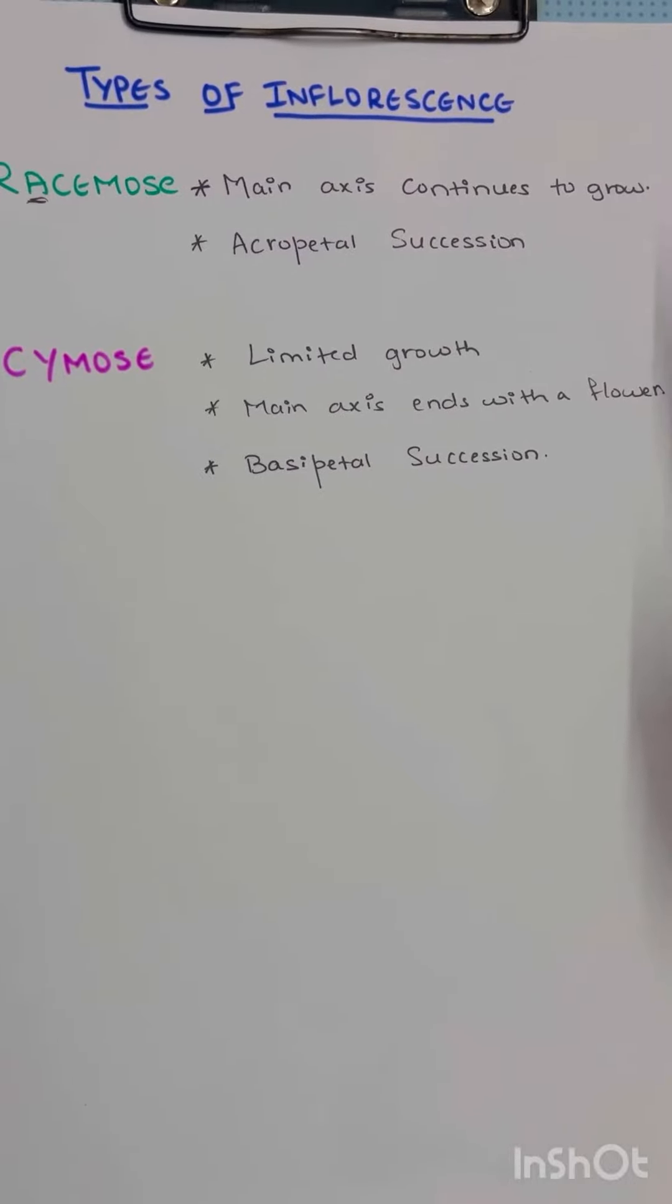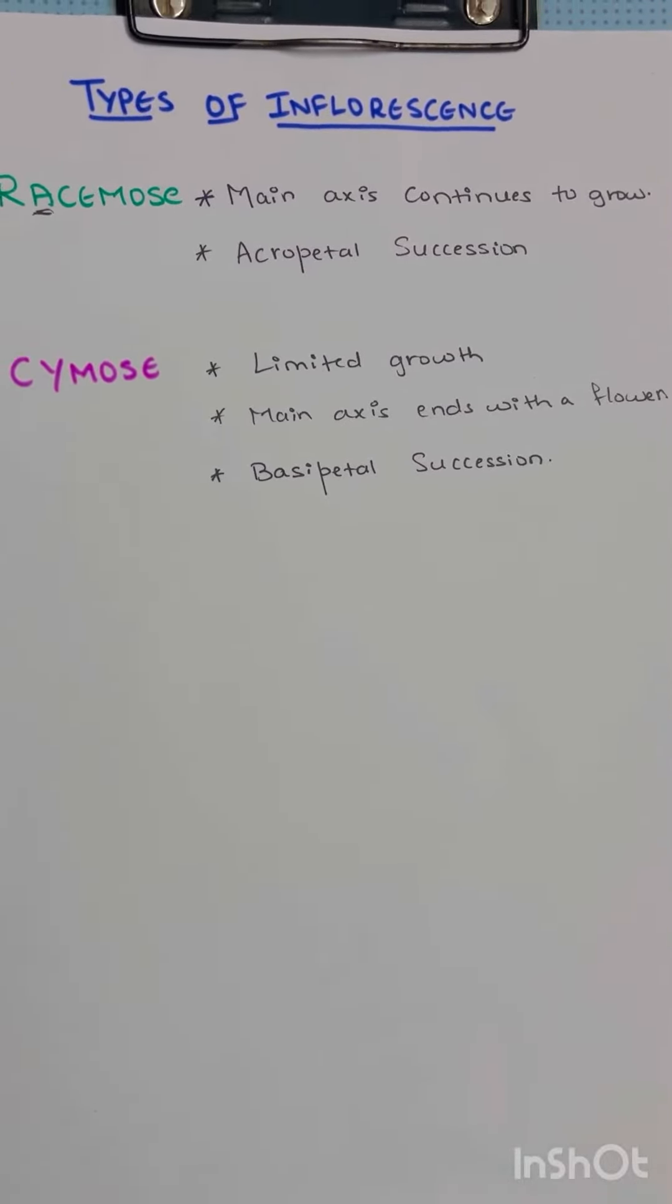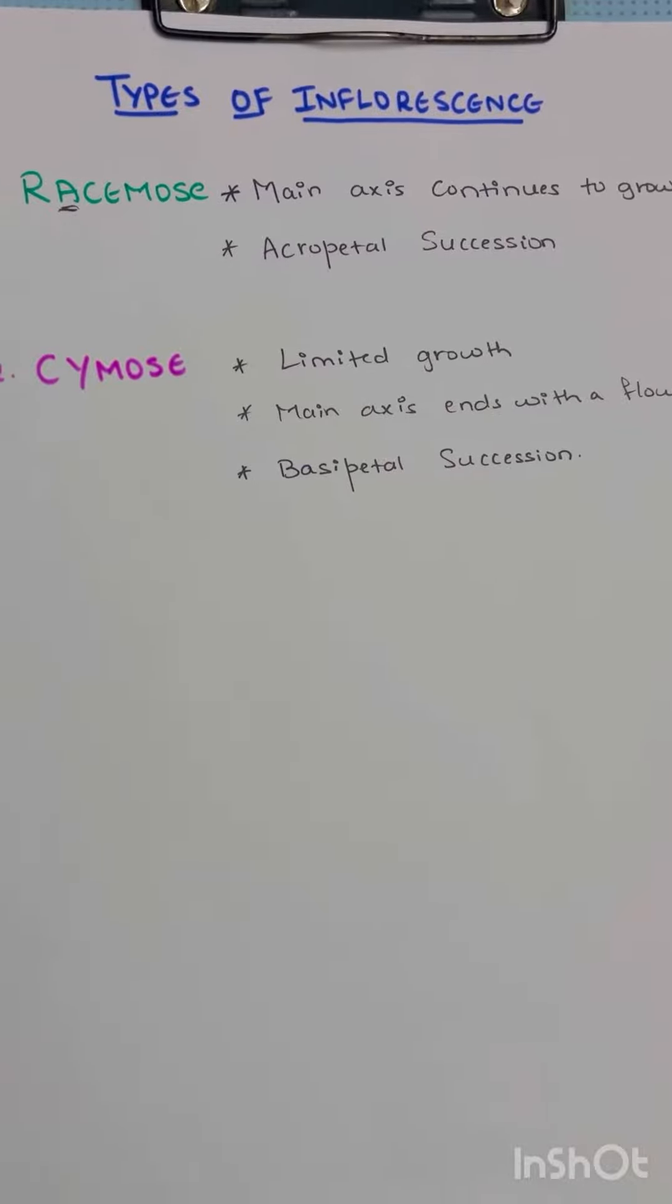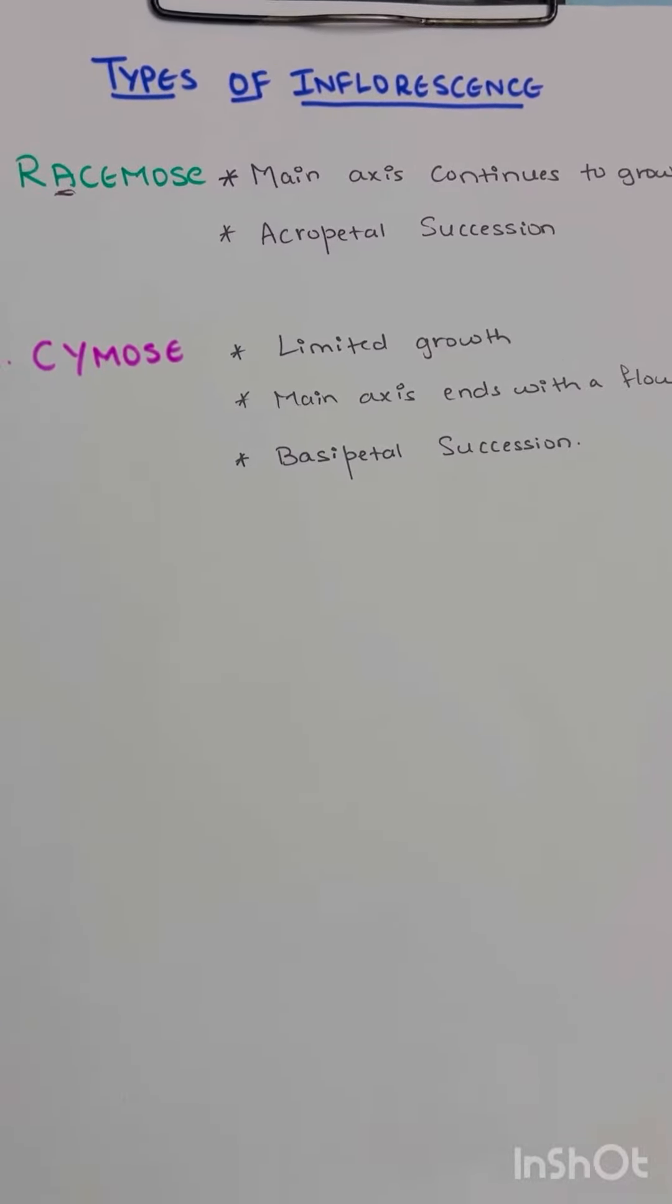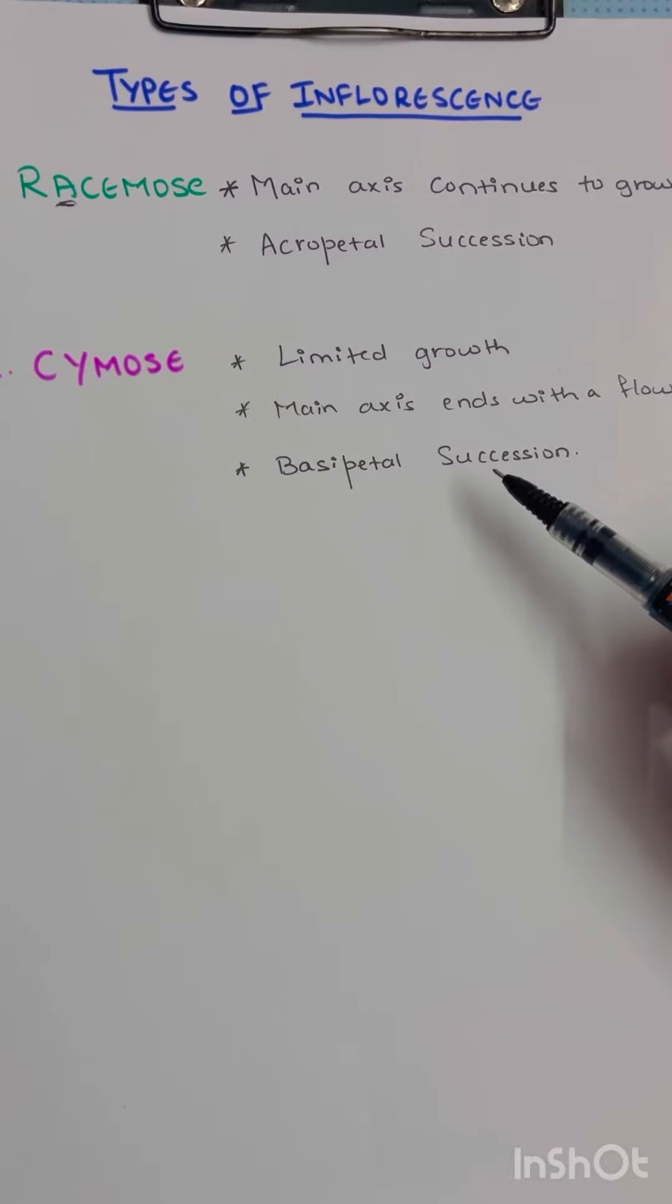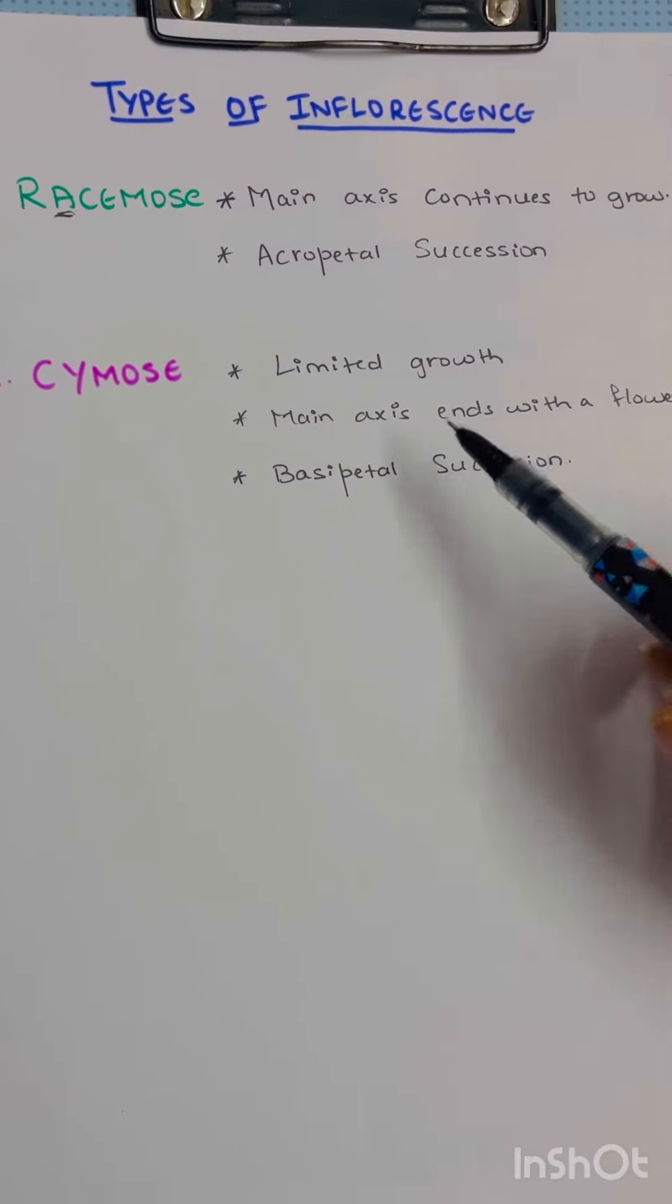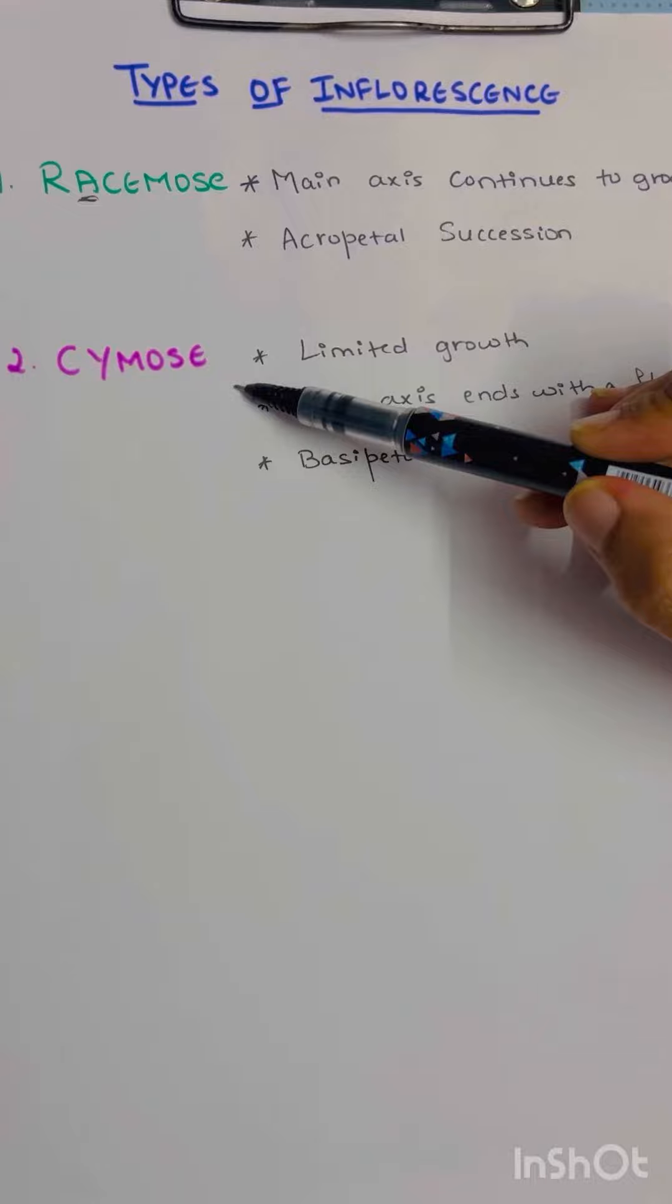Hello guys, welcome to my YouTube channel at Neat Biology. Now we'll see types of inflorescence. Inflorescence is the arrangement of cluster of flowers on a floral axis. There are two main types of inflorescence.